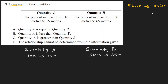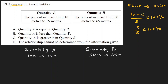To calculate the percentage increase, you take the new value (15) minus the original value (10), divide by the original value, and multiply by 100 percent. So: (15 minus 10) divided by 10, multiplied by 100 percent. That gives us 5 divided by 10, times 100 percent.